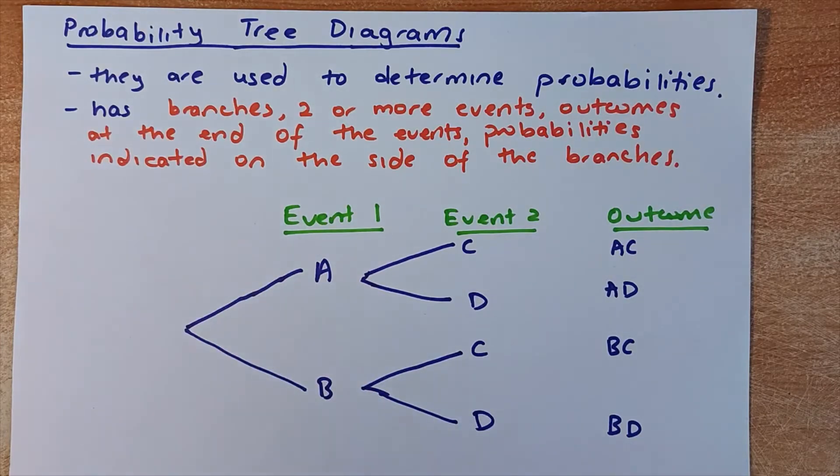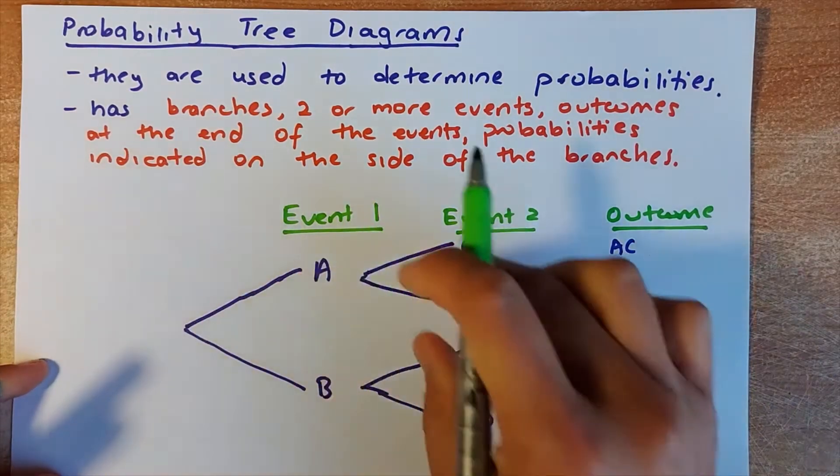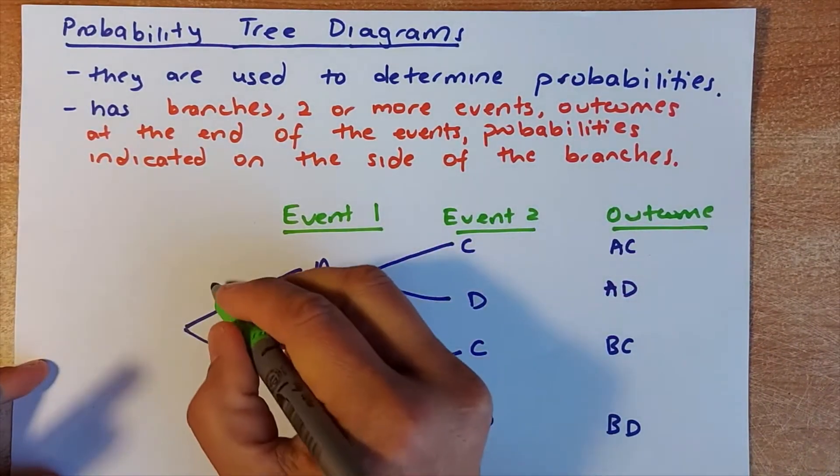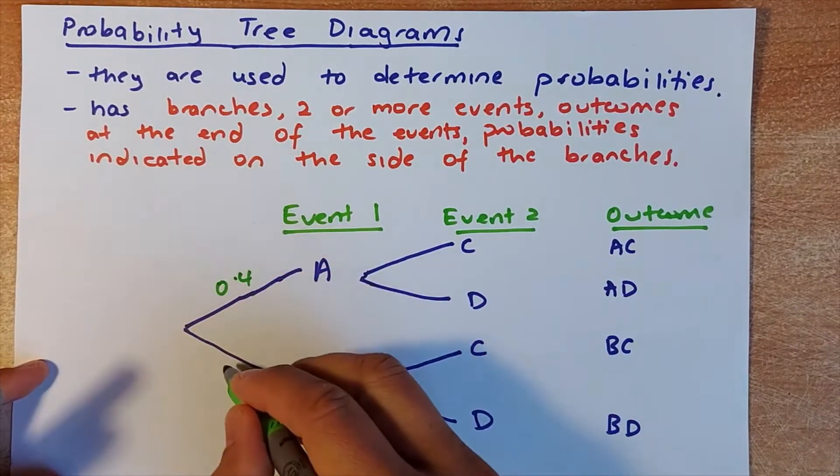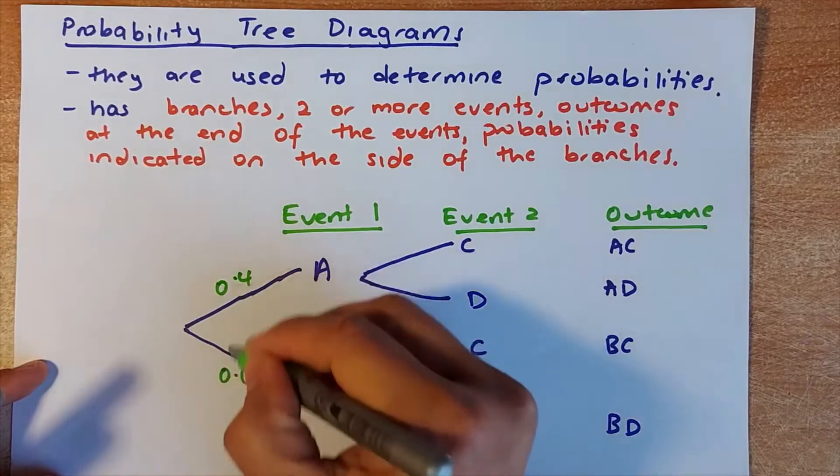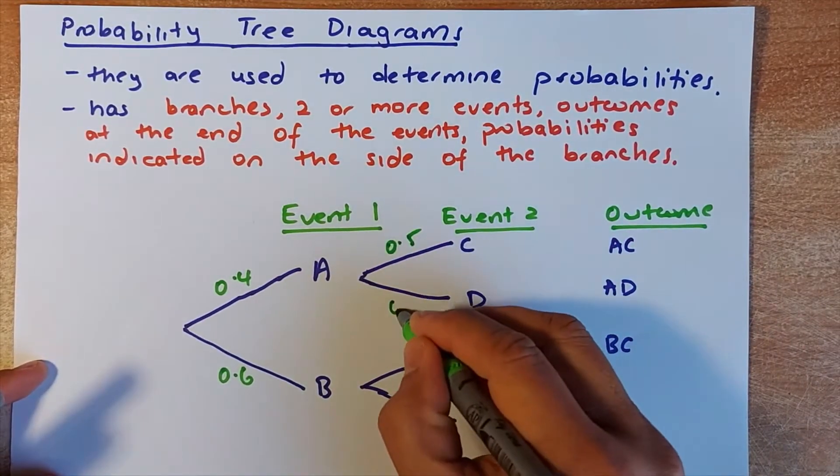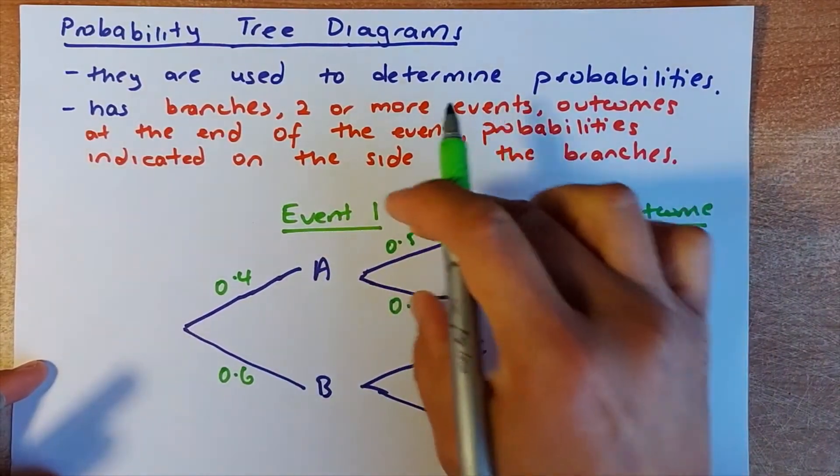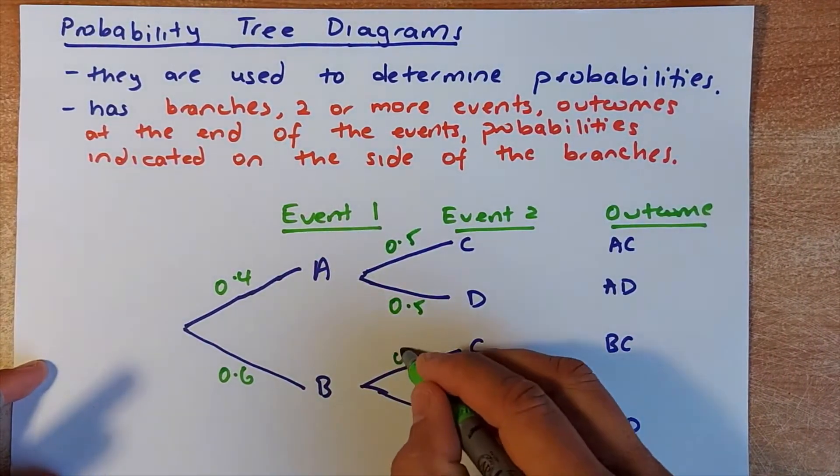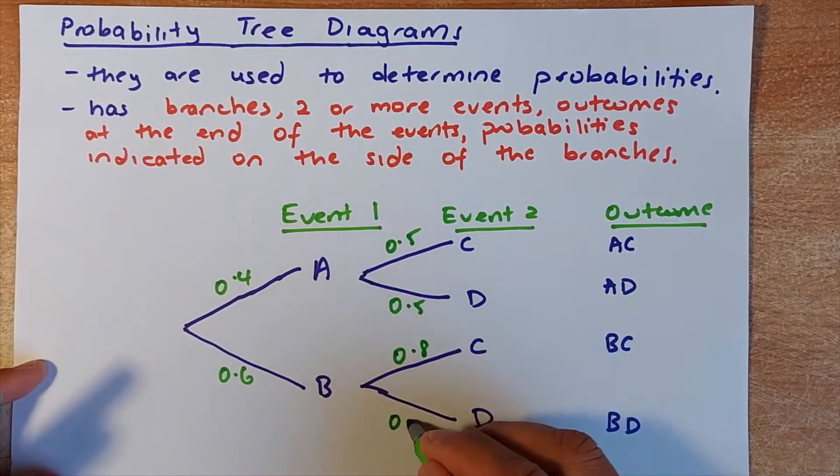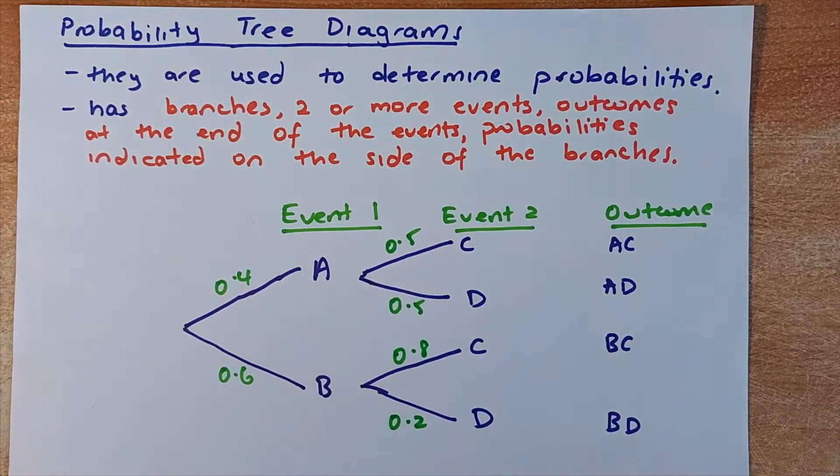For example, we need to know that in each branch, they must add up to 1. That's the first rule. If this is 0.4, this must be 0.6 because these two must add up to 1. So if this is 0.5, this must be 0.5 because the branch add up to 1. And if this is 0.8, that must be 0.2 because they add up to 1.